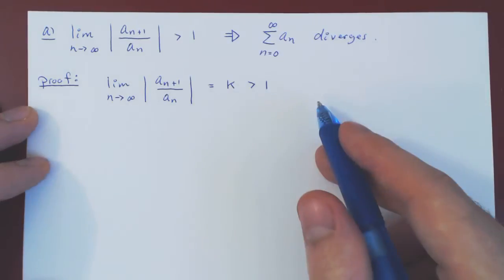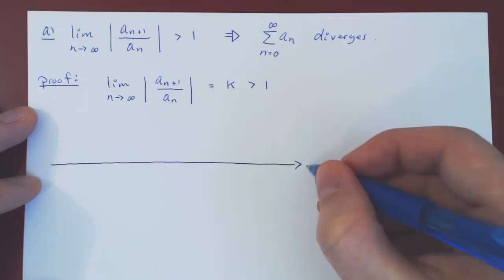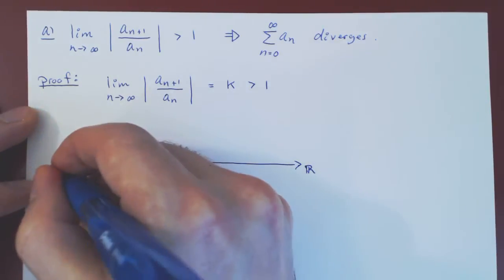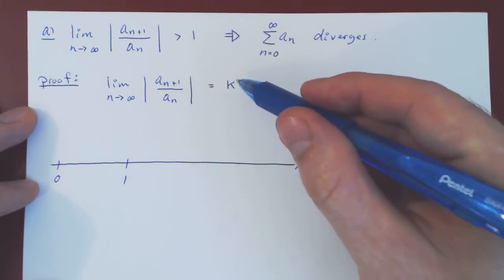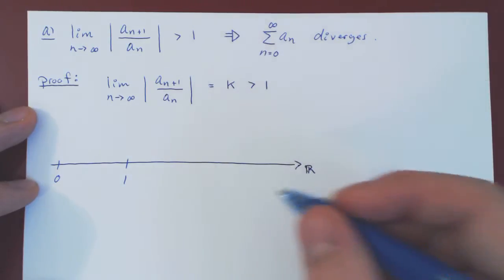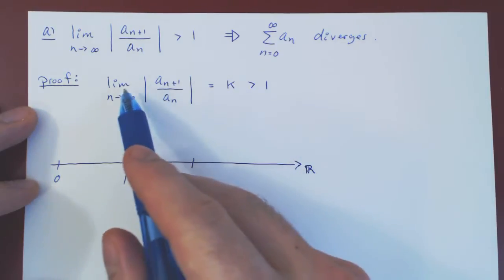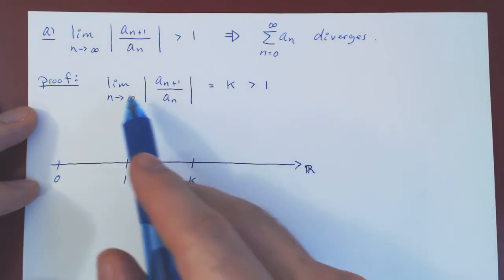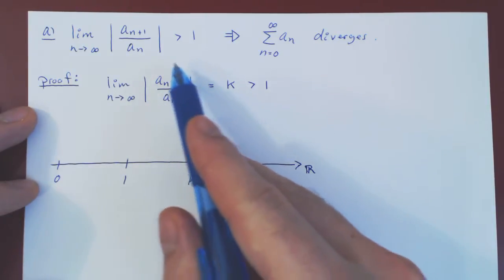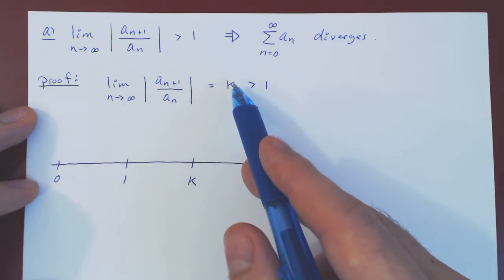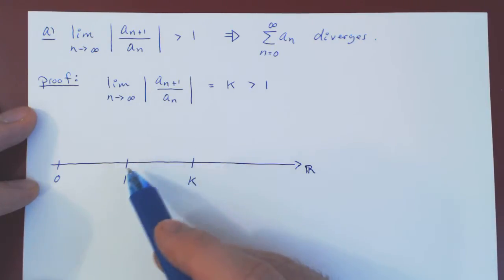Let's look at this on the real line. We have 0, we have 1, and k is some real number larger than 1. This limit equality implies that as n gets larger and larger, this term is getting as close as we want to k. So we can form a small interval around k that is away from 1.